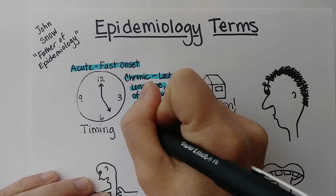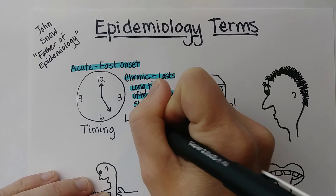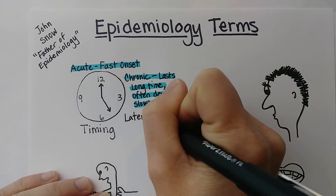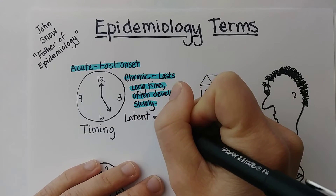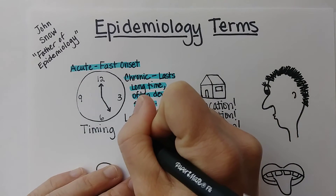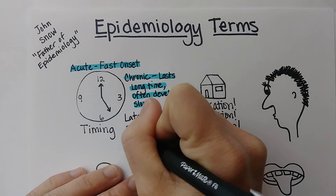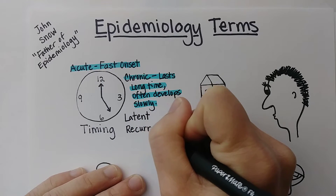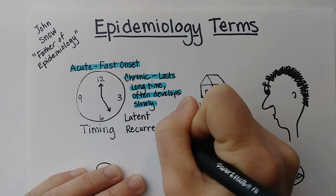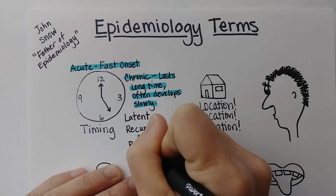The third term to know about for timing is latent. And I'm also going to add recurrent, or relapse, as additional timing terms.